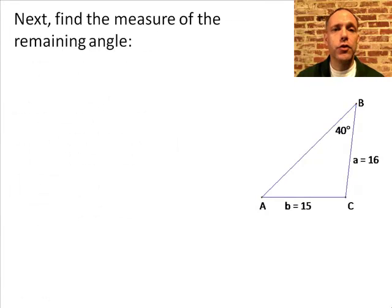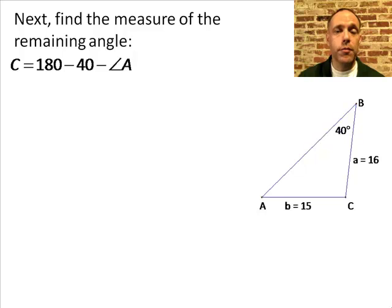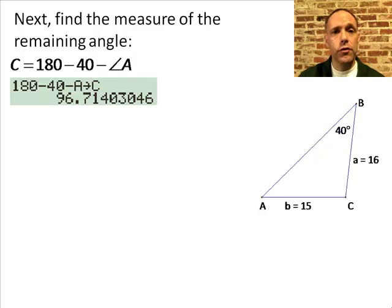Next, find the measure of the remaining angle. Remember from geometry that the three angles of the triangle add up to be 180, so angle C is 180 minus 40 minus the measure of angle A that we just found. I'm going to store this in my calculator's memory as well. From the screenshot, angle C measures about 96.7 degrees.